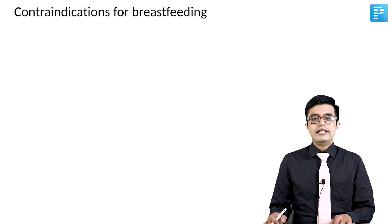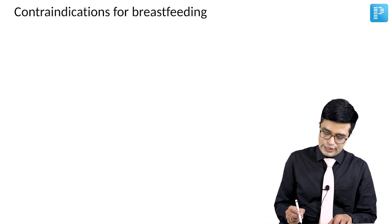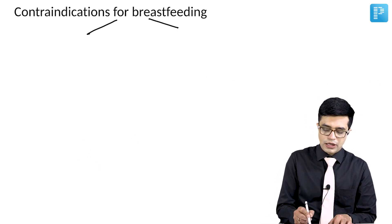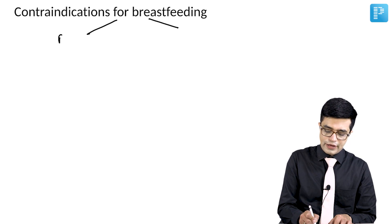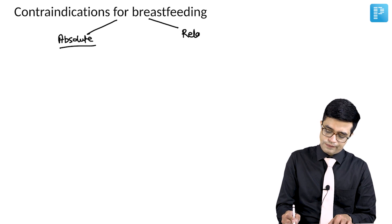What are the contraindications for breastfeeding? The contraindications can be divided into two parts: absolute contraindication and relative contraindication.